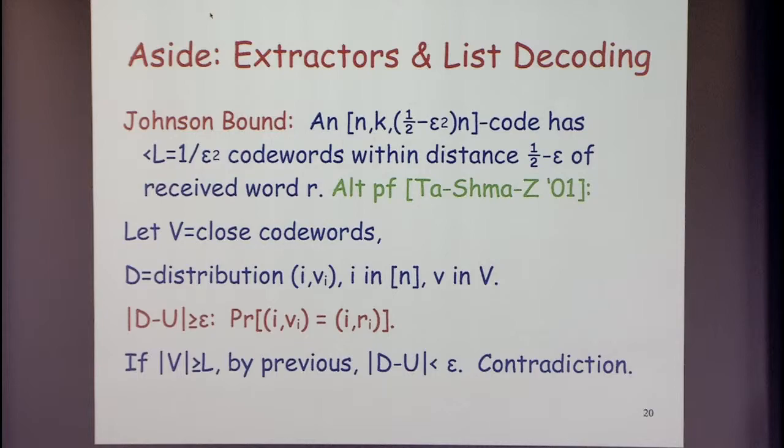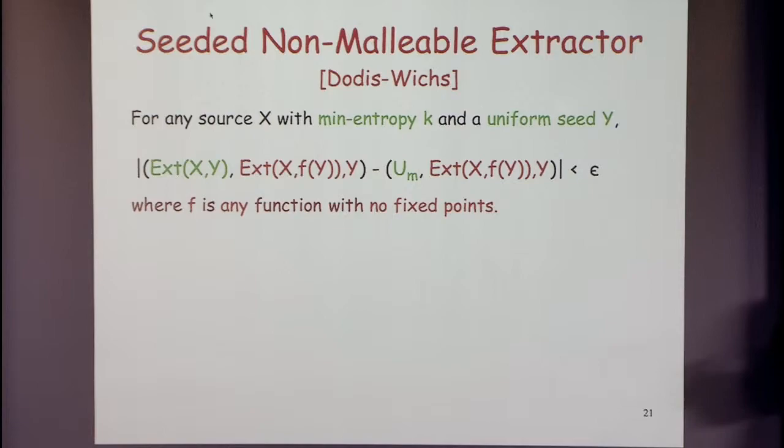It's kind of neat that these two seemingly different areas — coding theory and randomness extraction — have basically the same proof.